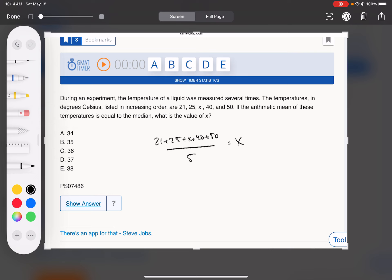We can just set that up using the average formula. And now we're off to the races. 136 plus X equals 5X.